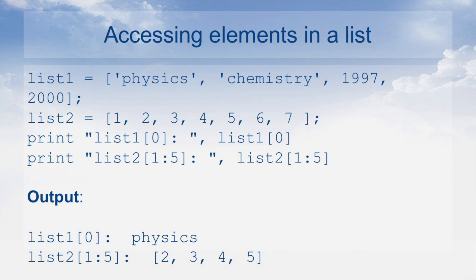When I specify 1:5, it goes from index 1 up to index 5 minus 1, that is 4. So it is from index 1 to 4 — at location 1 we have 2, at location 2 we have 3, and so on up to 5.